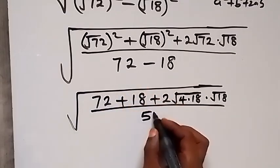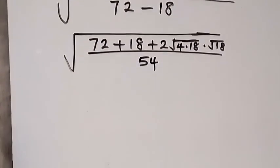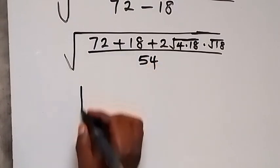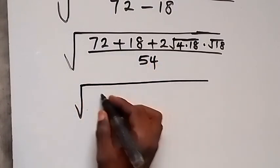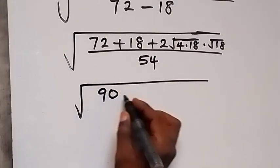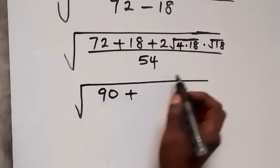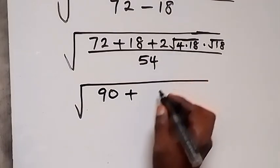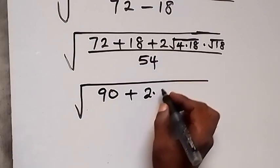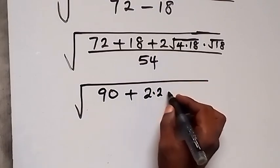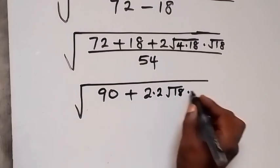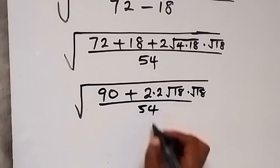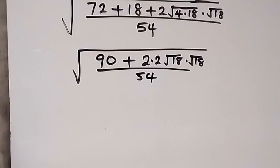72 minus 18 gives us 54. Then 72 plus 18 gives us 90. We separate root 72 as root 4 times root 18, and root 4 is 2, so we have 2 times 2 times root 18 times root 18, all divided by 54.